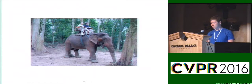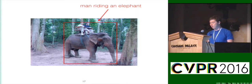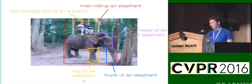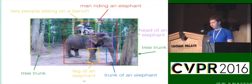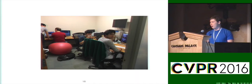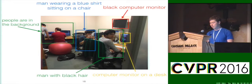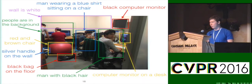Let's look at some qualitative results. In this image from the Visual Genome test set, our system finds a man riding an elephant — notice that the box covers both the elephant and the people. The system also finds two people sitting on a bench, several parts of the elephant, and two trees in the background. The model also works on novel images. In this image of an office at Stanford, it finds the computer monitors, the people, a red and brown chair, the backpack and the door handle, and also the wall.